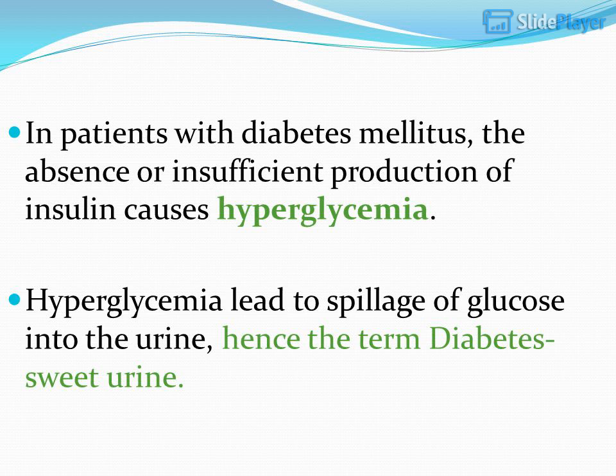Hyperglycemia leads to spillage of glucose into the urine, hence the term diabetes — 'sweet urine'.